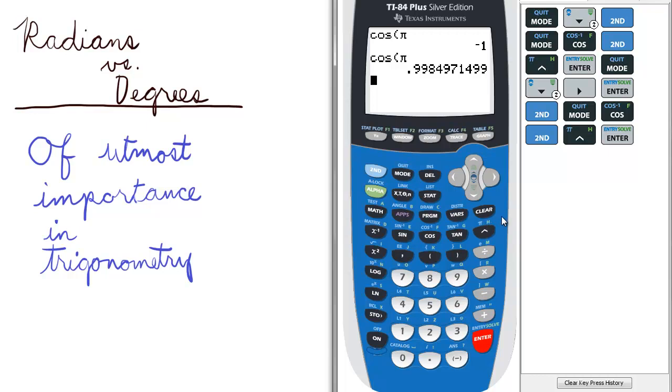However, a teacher could be intentionally tricky and give you the cosine of 60 radians, or the cosine of pi degrees.